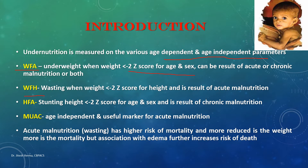More important categories are wasting and stunting. Wasting is defined as weight for height less than minus two z-scores for a particular height, and it is a result of acute malnutrition. Stunting is a result of chronic malnutrition. Another age-independent parameter is mid-upper arm circumference (MUAC), which is a good marker of acute malnutrition. Acute malnutrition increases mortality, and greater weight reduction is associated with greater mortality.